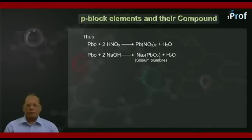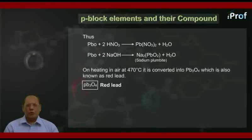Thus, PbO plus 2HNO3 give Pb(NO3)2 plus H2O. PbO plus 2NaOH give Na2PbO2, known as sodium plumbite, plus H2O. On heating in air at 470 degrees Celsius, it is converted into Pb3O4, which is also known as red lead.